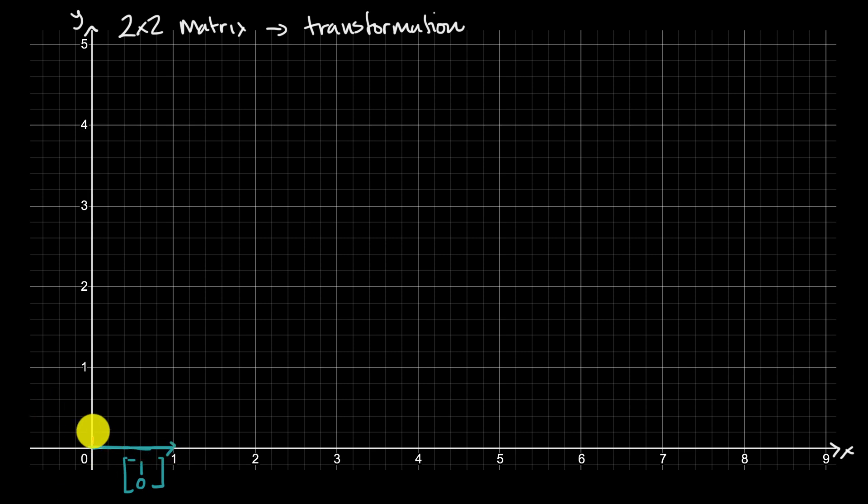And then this right over here, what would we call that? Well, that we would call the [0, 1] vector because it doesn't go at all in the x-direction and it only goes up one in the y-direction.